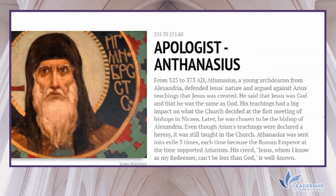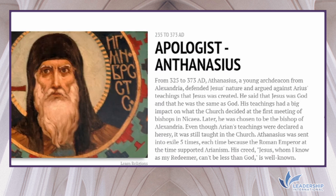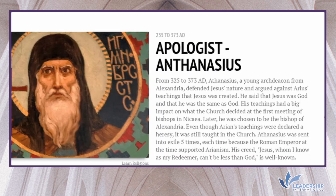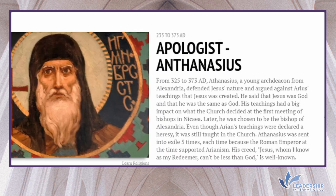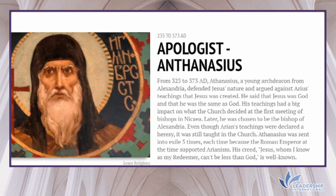From 325 to 373 AD, Athanasius, a young archdeacon from Alexandria, defended Jesus' nature and argued against Arius' teaching that Jesus was created. He said that Jesus was God and the same as God. His teachings had a big impact on what the church decided at the first Council of Bishops in Nicaea. He was later chosen as Bishop of Alexandria. Even though Arian teachings were declared heresy, they were still taught in the church. Athanasius was sent into exile five times, each time because the Roman Emperor supported Arianism. His creed — 'Jesus as my Redeemer can't be less than God' — is well known.